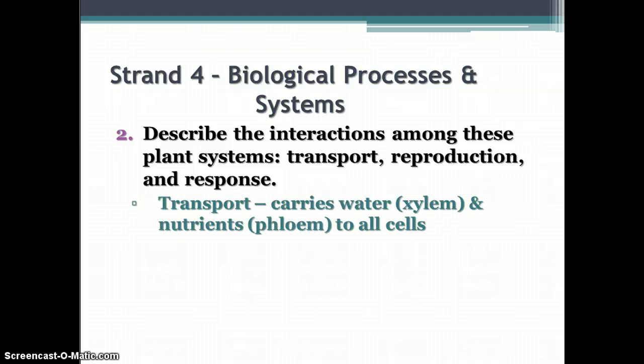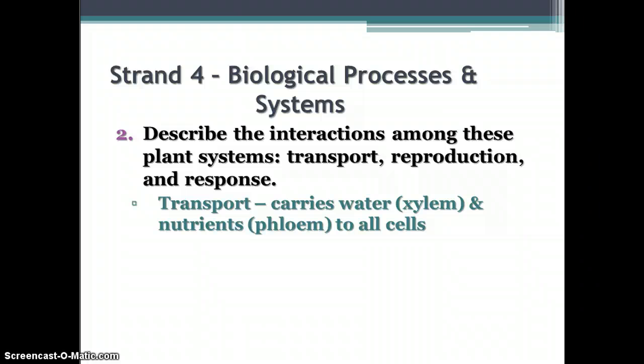Transport carries water and nutrients to all cells. Remember that transport includes the xylem, which carries water, and the phloem, which carries food or nutrients to all the cells. These are found in the vascular cylinder in the root and the stem, and transport materials to and from all cells of the plant.